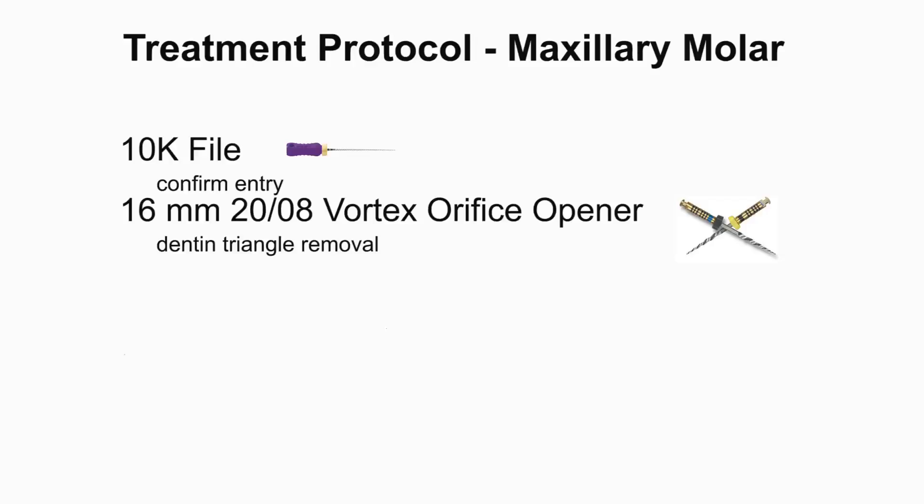This is my treatment protocol for a typical maxillary molar. Following access into the chamber, a 10k file is used to confirm entry into the distal buccal, mesial buccal, and palatal canals. The dentin triangle is then removed with a 16mm, 20-08 vortex orifice opener. The 16mm length allows easier access for patients with limited opening, especially in those difficult to reach second molar teeth.